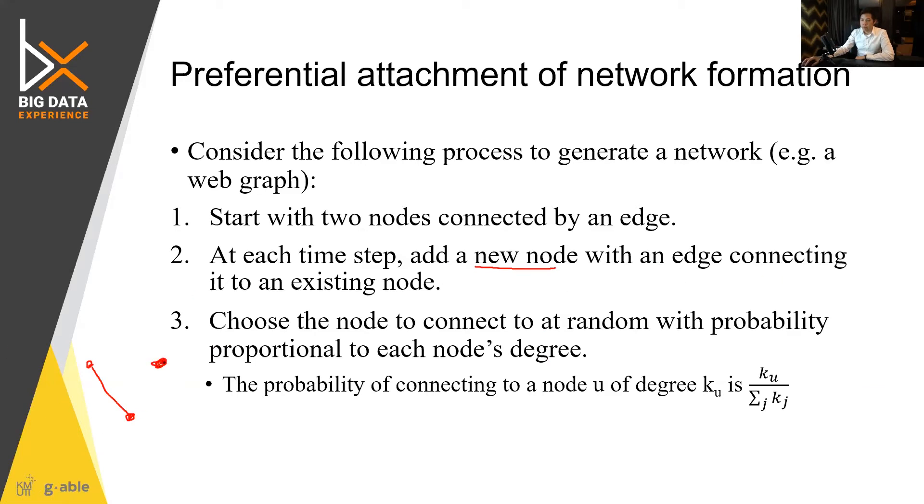So this node has to connect to some node. Choose the node to connect at random with probability proportional to each node degree. Probability of connecting to a node u of degree Ku is Ku over the summation of K.